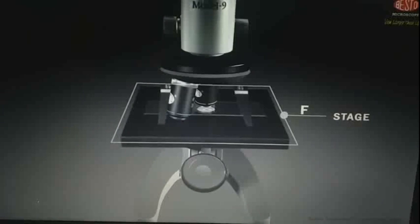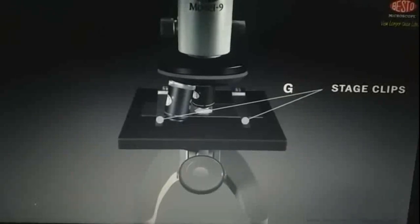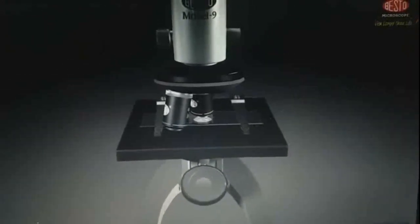F, stage. It is the flat surface on which you put slide or sample. G, stage clips. It holds the slides in place on the stage.